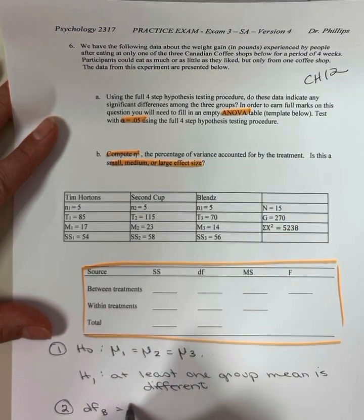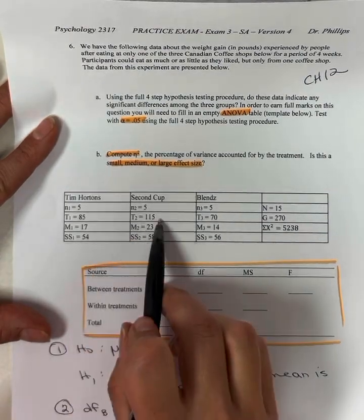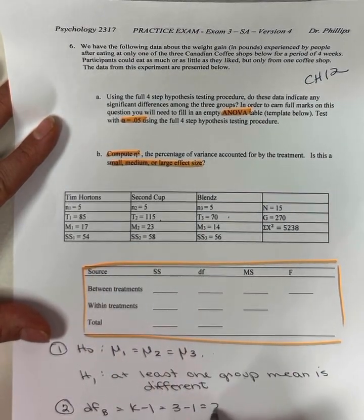Degrees of freedom between is k subtract 1, where k is the number of groups, one, two, three groups. That's two.